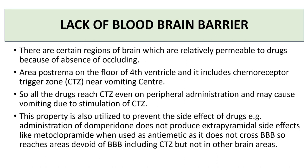Certain areas in the brain are relatively permeable to drugs due to the absence of occluding zonules — such as the area postrema on the fourth ventricle, which includes the chemoreceptor trigger zone near the vomiting center. All drugs reach the CTZ even on peripheral administration and may cause vomiting due to stimulation of the CTZ. This property is utilized clinically: domperidone does not produce extrapyramidal side effects like metoclopramide because it does not cross the blood-brain barrier, yet it reaches the vomiting center and inhibits vomiting.